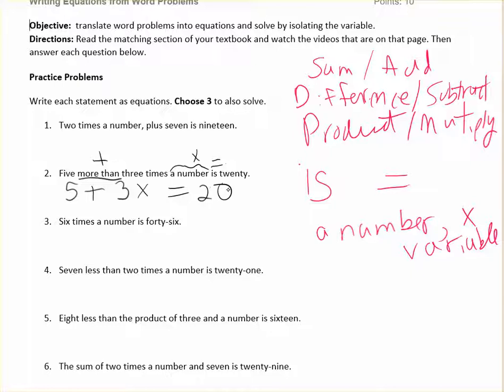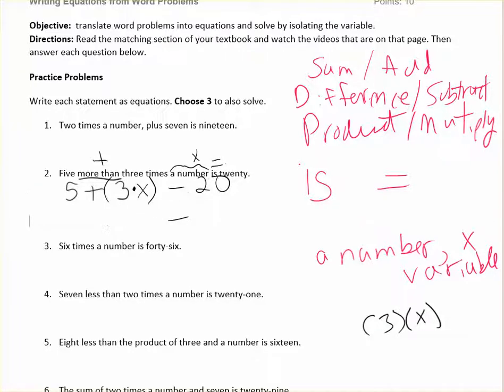You could put parentheses around 3x or you could write the multiplication as three times x if you wanted to. You could put a dot between the three and the x to show multiplication. So there's several ways to write this correctly and you wouldn't get marked wrong if you did it a different way than what I have.